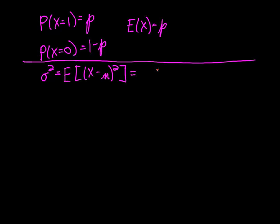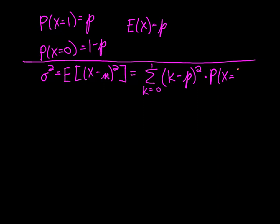That means we sum over all the possible values, which is from 0 to 1, of k minus the mean squared times the probability of that value — the probability that x equals k.